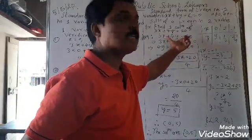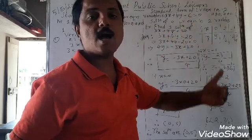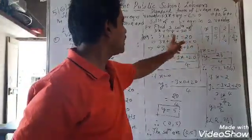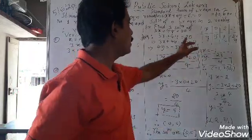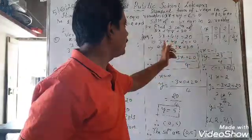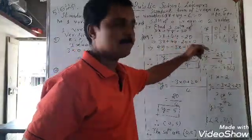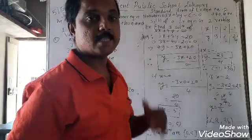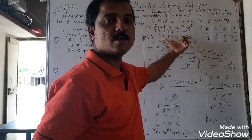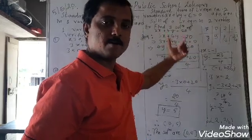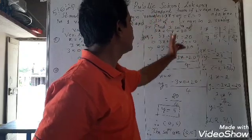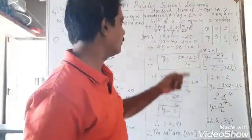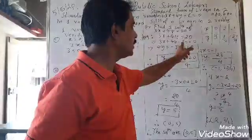If any equation in two variables is given like this, this is how you can bring it to standard form ax plus by plus c is equal to 0. 3x plus 4y is equal to 20 is not in standard form. When you bring 20 to this side, it becomes minus 20, so it is 3x plus 4y minus 20 is equal to 0. After comparing, a is 3, b is plus 4, and c is minus 20.